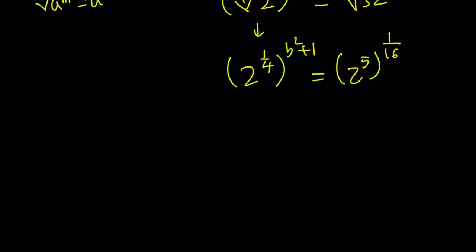Okay. It doesn't matter. We can switch them around too. Let's multiply the exponents. The first one gives us 2 to the power b squared plus 1 over 4. The second one gives us 2 to the power 5 over 16.